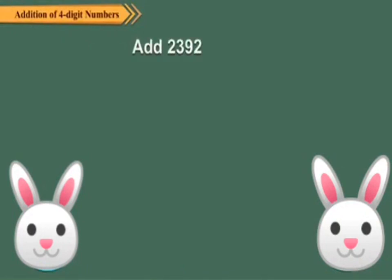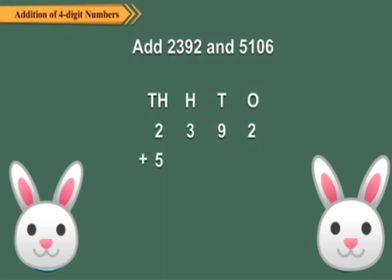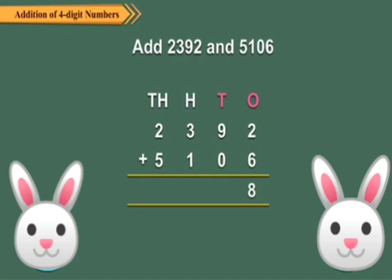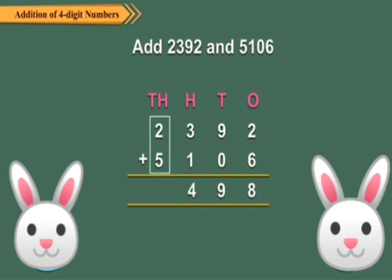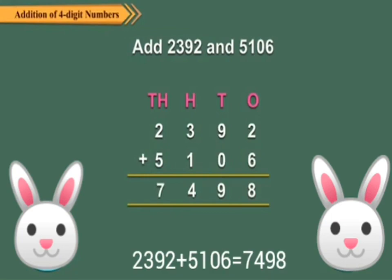Next example: Add 2392 and 5106. Arrange the numbers in column method according to their place value. Step 1: Add the ones. 2 plus 6 equals 8. Step 2: Add the tens. 9 plus 0 equals 9. Step 3: Add the hundreds. 3 plus 1 equals 4. Step 4: Add the thousands. 2 plus 5 equals 7. So the sum is 7498.